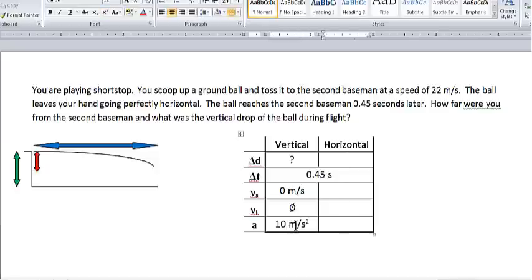Now, horizontally, we don't know how far you were. That's the first thing we're trying to figure out. That's the blue arrow, how far you were from the second baseman. Your horizontal velocity is 22 meters per second.